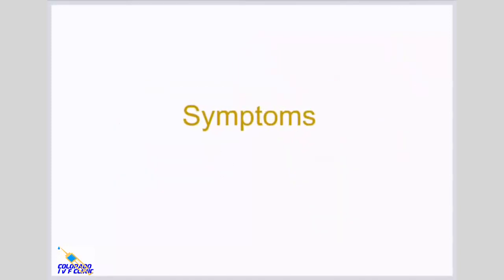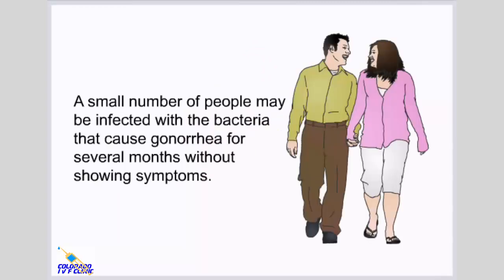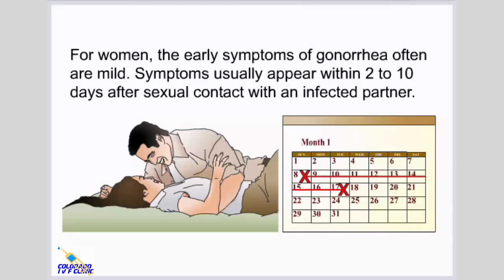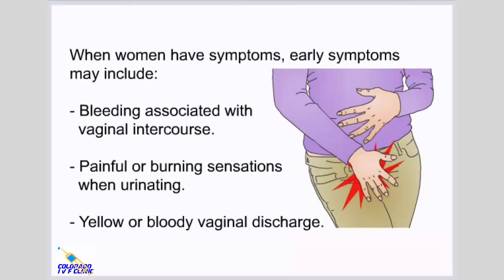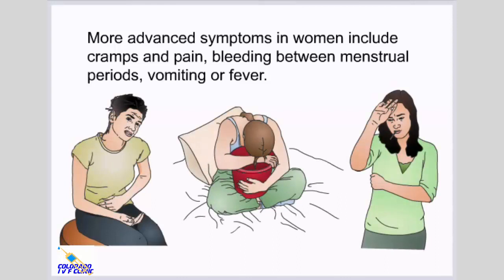Symptoms. A small number of people may be infected with the bacteria that cause gonorrhea for several months without showing symptoms. For women, the early symptoms of gonorrhea are often mild, usually appearing within 2 to 10 days after sexual contact with an infected partner. Symptoms may include bleeding associated with vaginal intercourse, painful or burning sensations when urinating, and yellow or bloody vaginal discharge. More advanced symptoms in women include cramps and pain, bleeding between menstrual periods, vomiting, or fever.